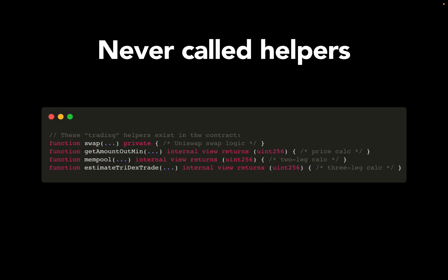Connect that with the never-called helper functions. These functions look legit — you have swaps, price checks, mempool scanning, and so on — but these functions are never called. None of them are used. It is just pure decoration; it makes the contract look safe and smart, but it is just there to fool you. These are fake functions to make the scam look real.